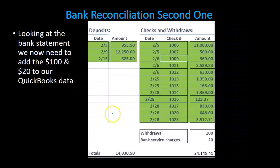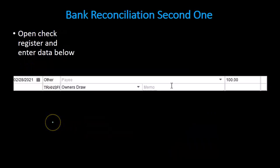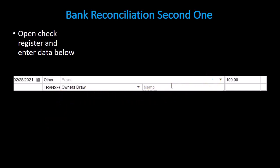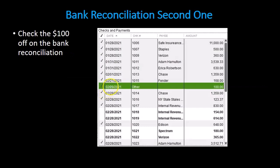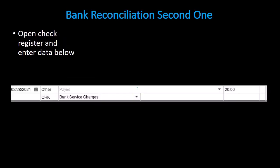If there are items on the bank reconciliation that are not on our books, those are things we're going to have to fix on the books — we'll actually enter an adjustment for the withdrawals and the bank service charges. That'll look something like this: we're in the register and we're just going to make an entry within the cash register, decreasing cash for the hundred and putting in the other side for the draws. We'll see this as we work through it in Excel.